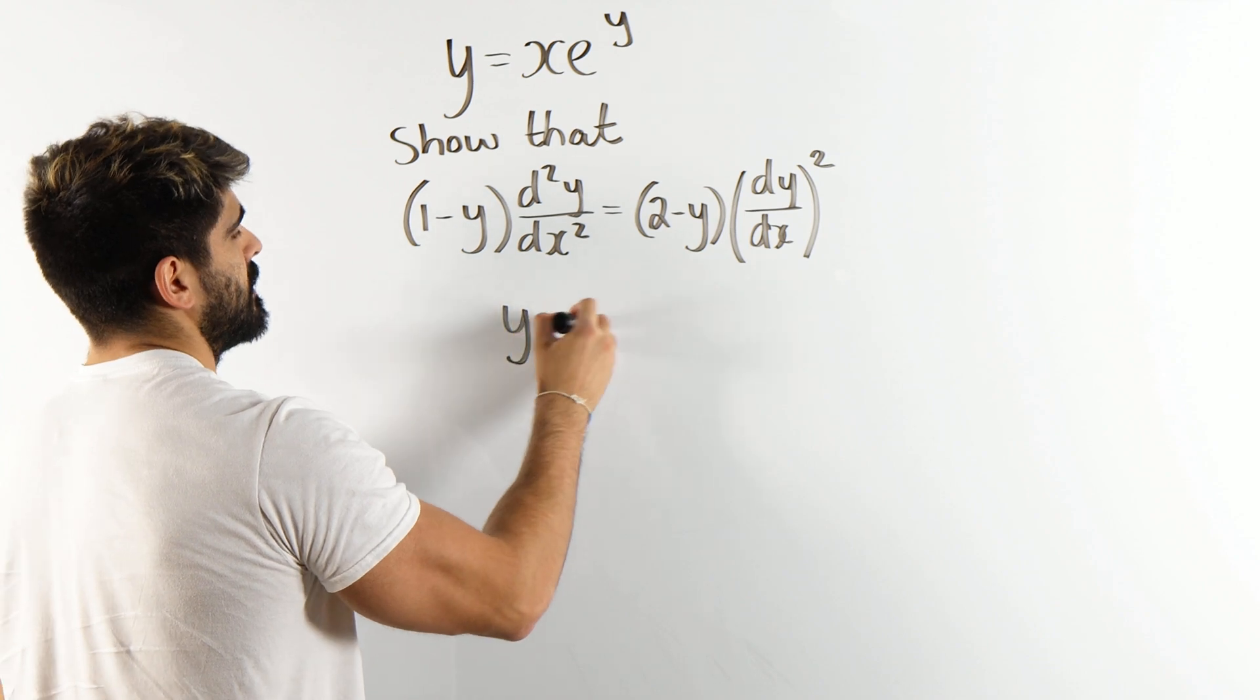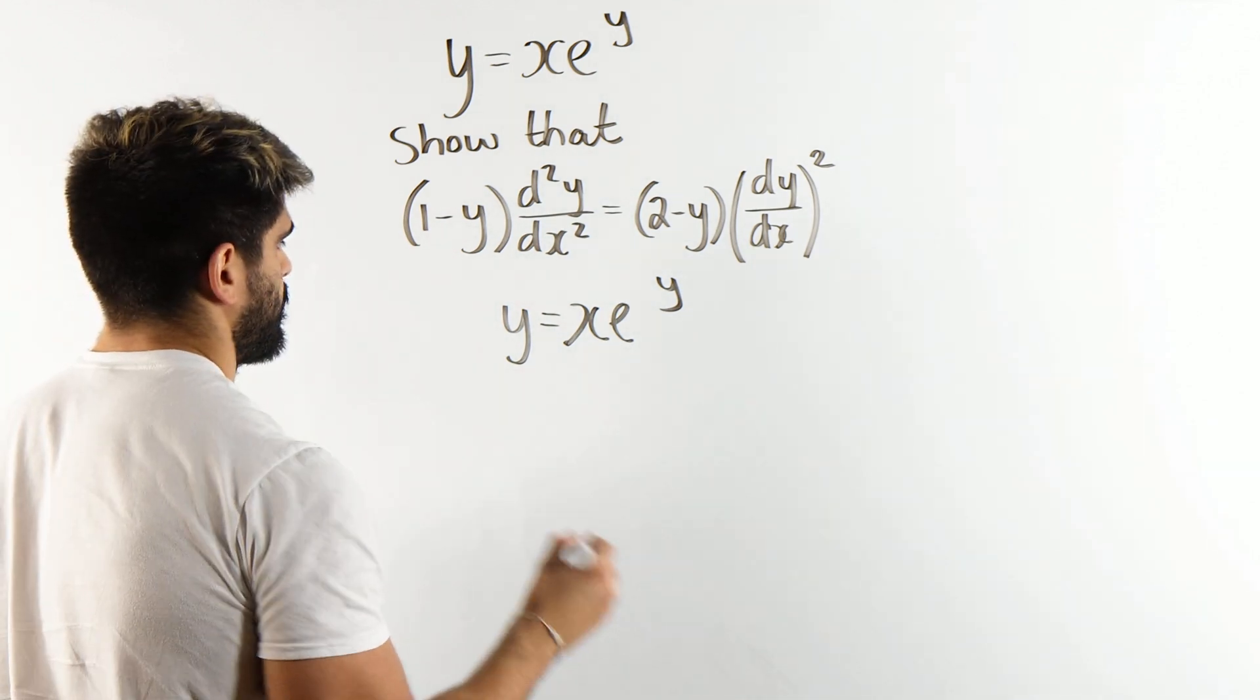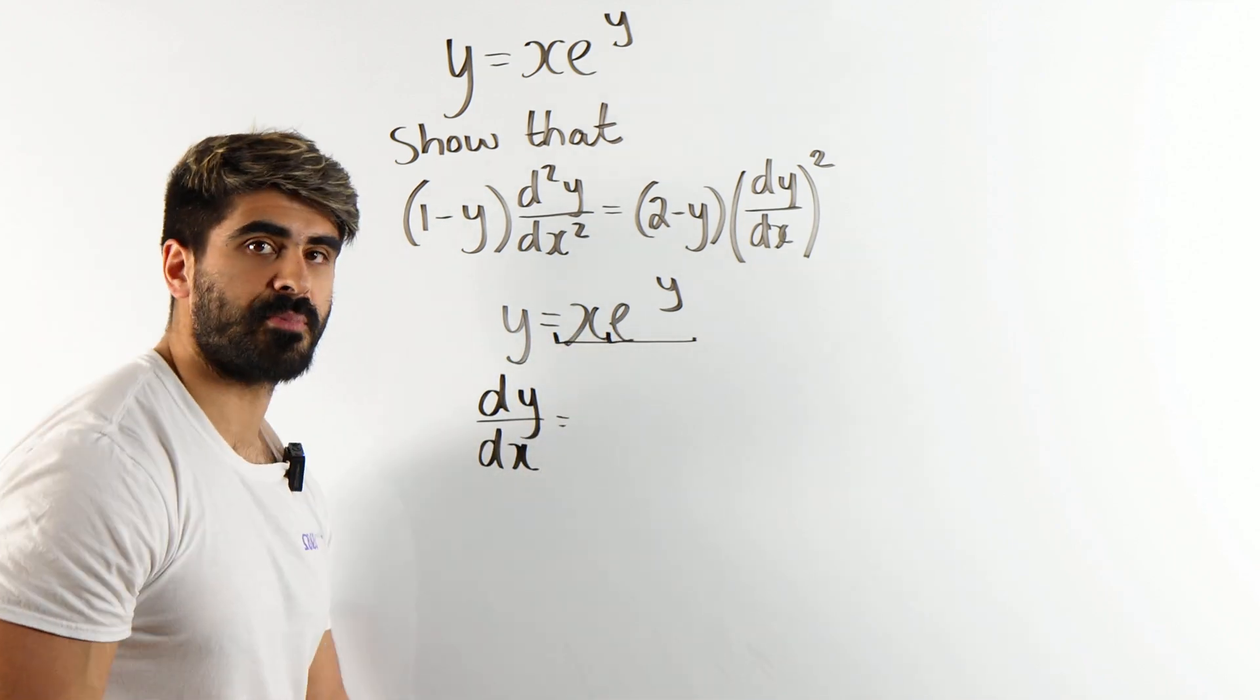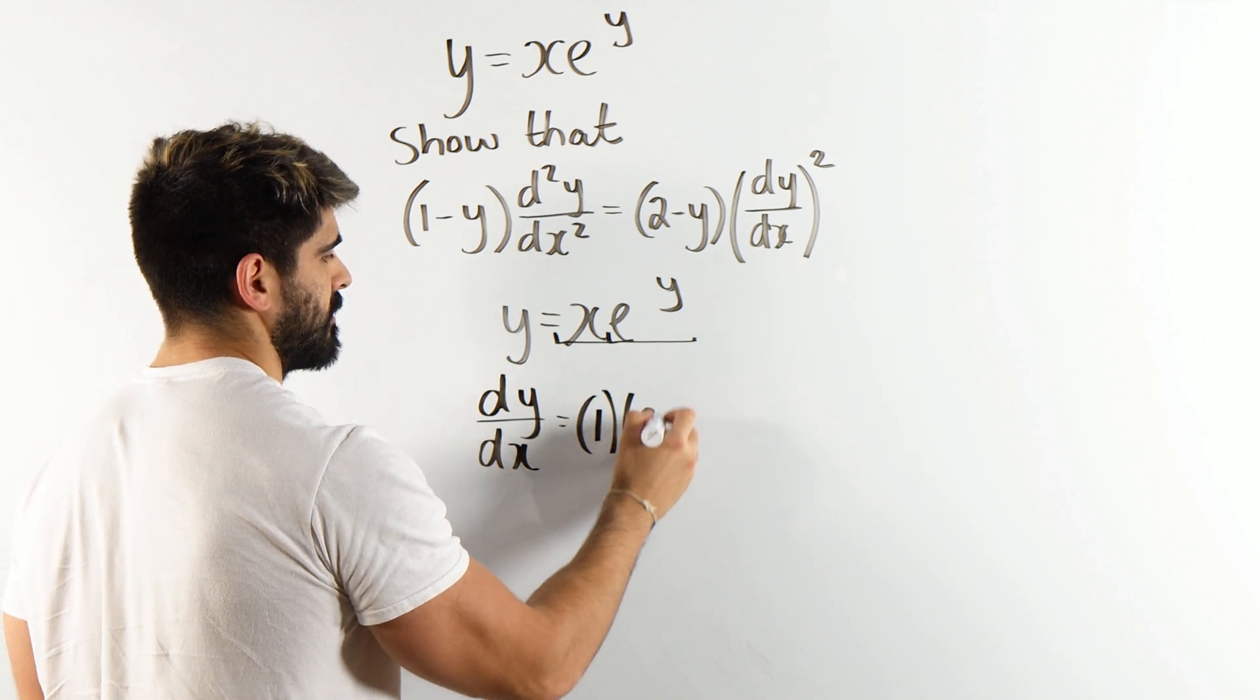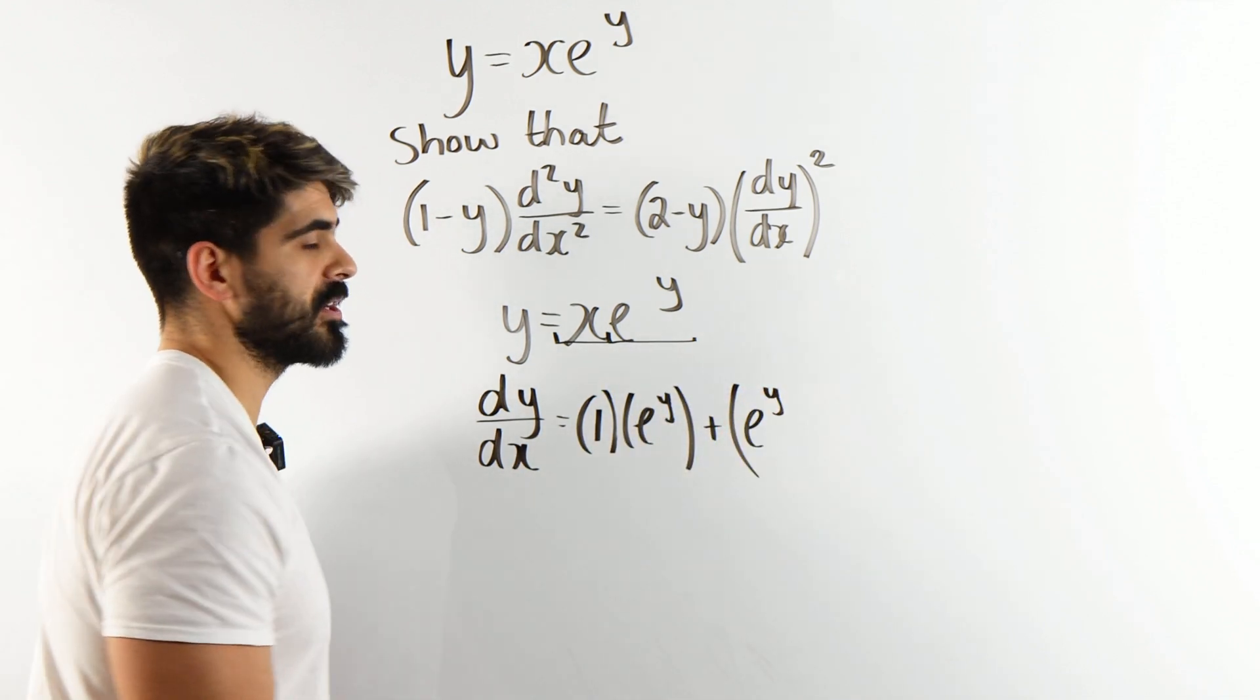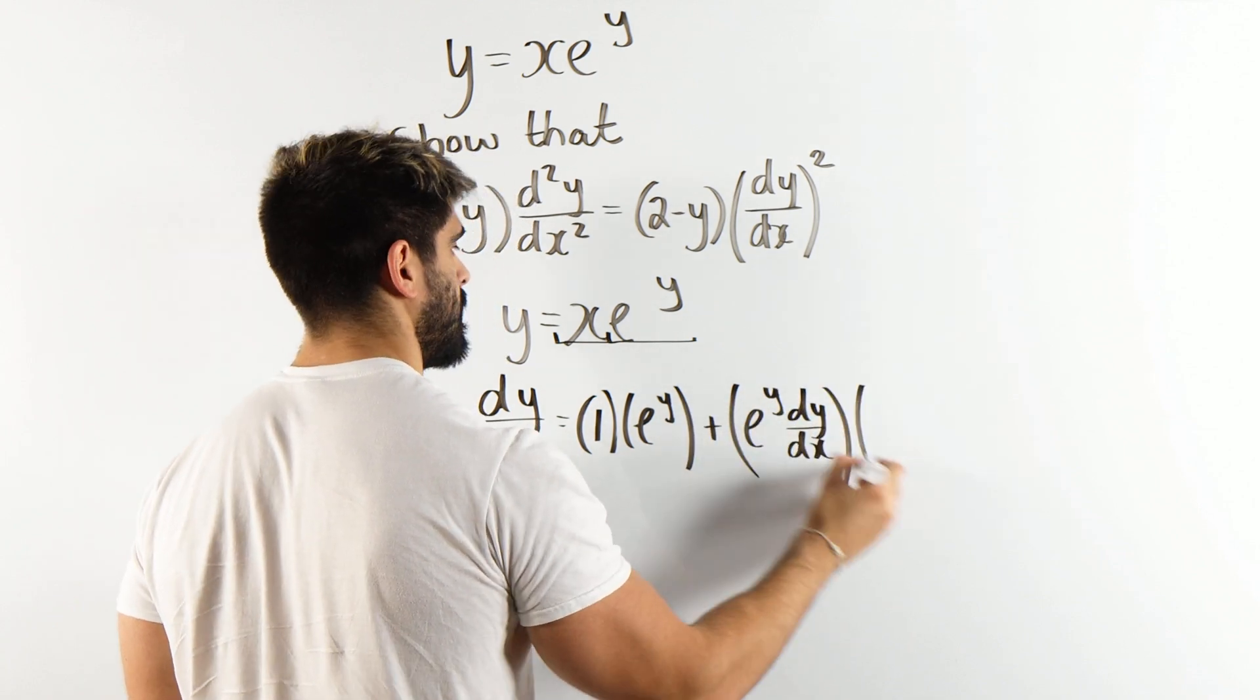So I have y is xe to the y. How do we differentiate something like that? dy/dx - we have two functions, this is going to be product rule. So we differentiate the first term, one, times the second, plus differentiate the second. Now e to the y will differentiate to itself, but we are differentiating with respect to x, so we're going to write dy/dx next to it times the first.